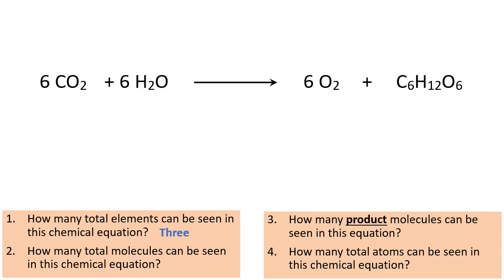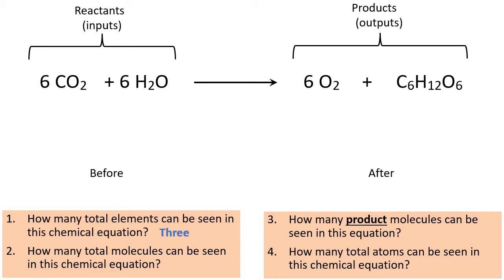Okay, so now let's focus on the equation in more detail. Notice there's an arrow in the middle. On the left of the arrow, these are what we call the reactants. These are the molecules that are going to be input into photosynthesis. On the right of the arrow, this is what are called the products. These are what's going to be produced. These are the outputs. Another way to look at it, the left of the arrow is kind of like the before, and the right of the arrow is kind of like the after.